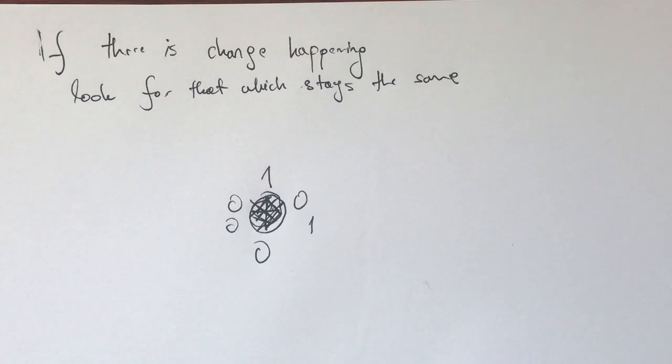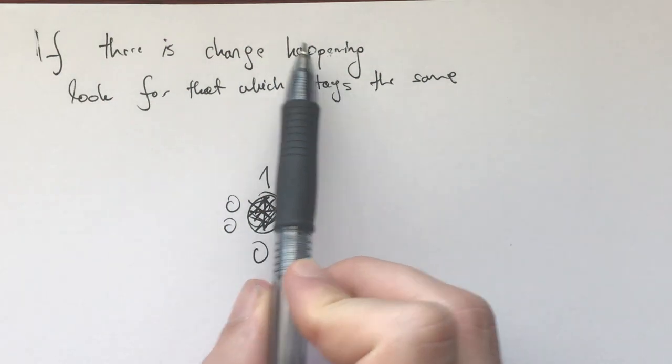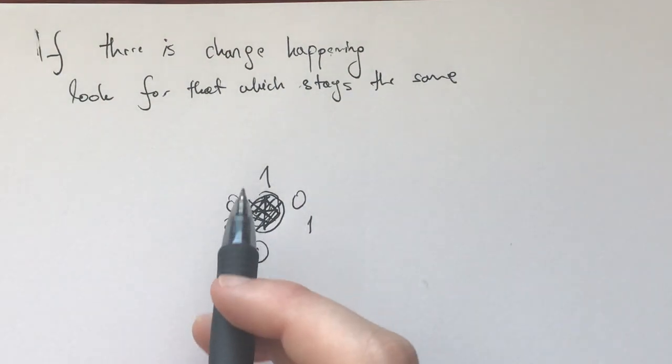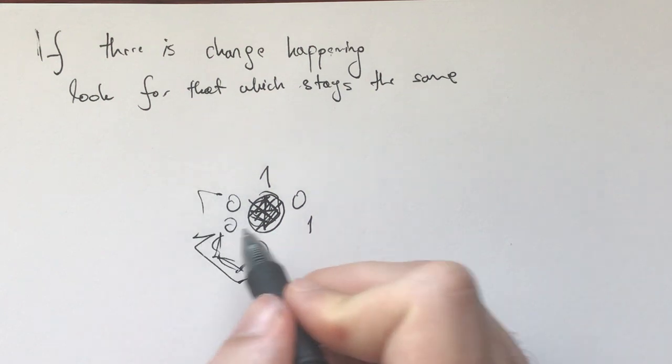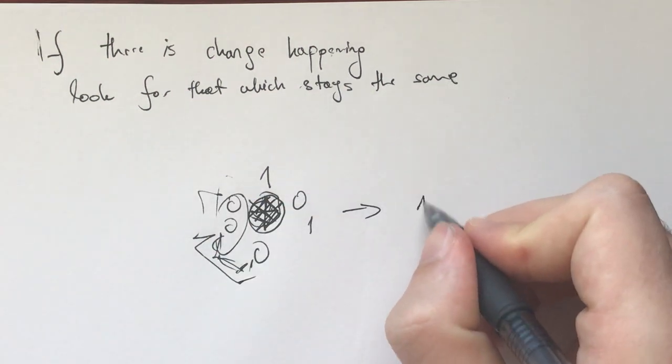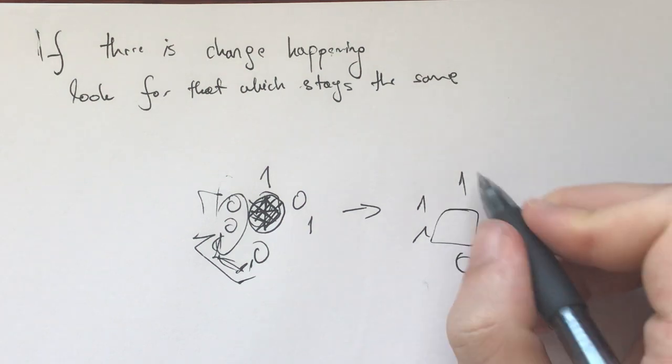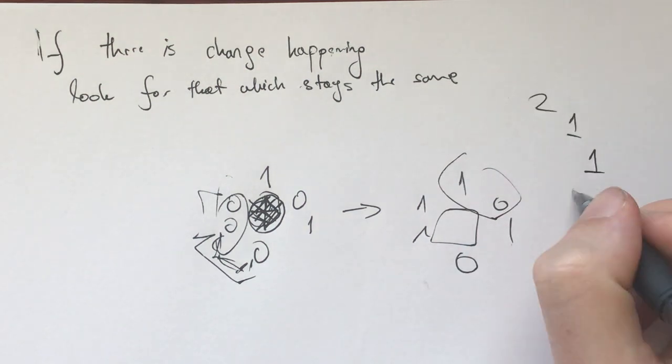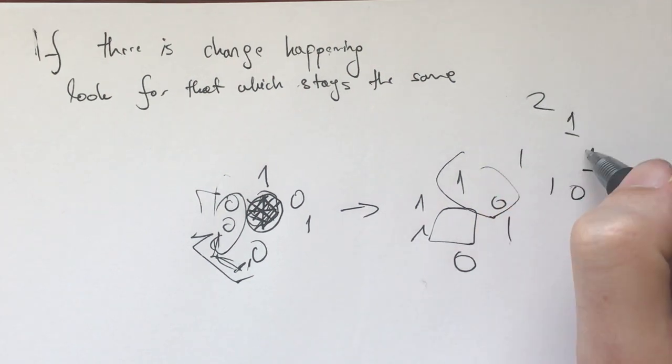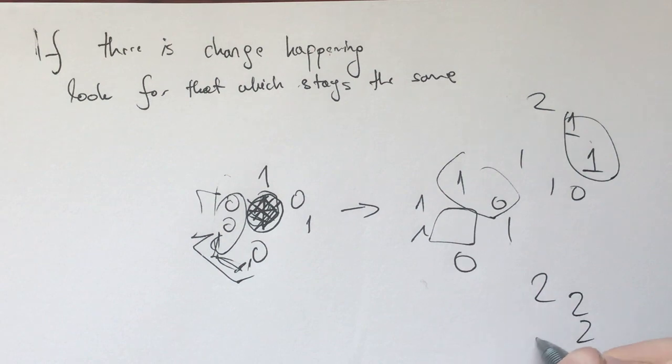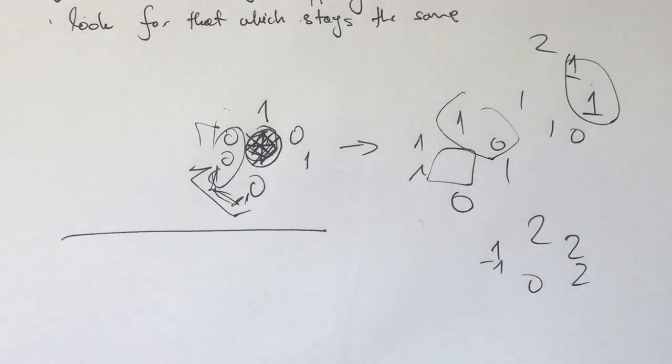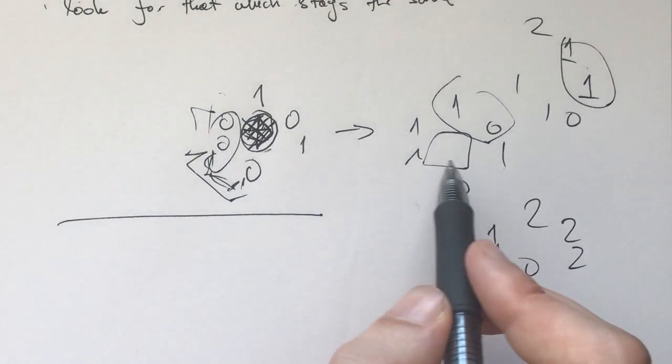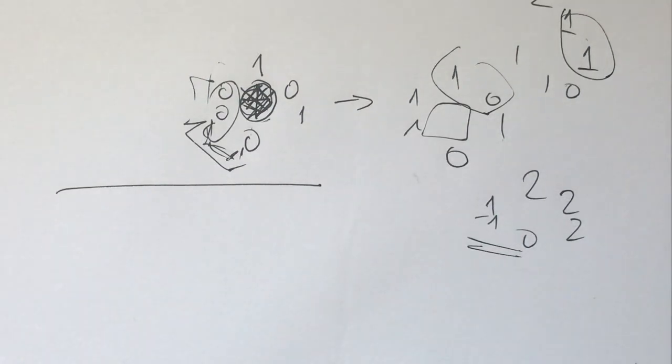So before we begin the problem, I want to point out what this principle of invariance is. That is saying that if there's a change happening, look for that which stays the same. And here in this problem, we are allowed to increase the size of two neighboring numbers by one. So when we're doing that, when we increase these two neighbors by one, now we have one one zero one zero zero. Then we increase these two neighbors and get one two one one zero one. Then we increase these two neighbors and get two two two zero one one. Can we at some point get to a place where all of these numbers are equal? And the thing to look for initially for you is as we're increasing these neighbors by one, what remains the same?